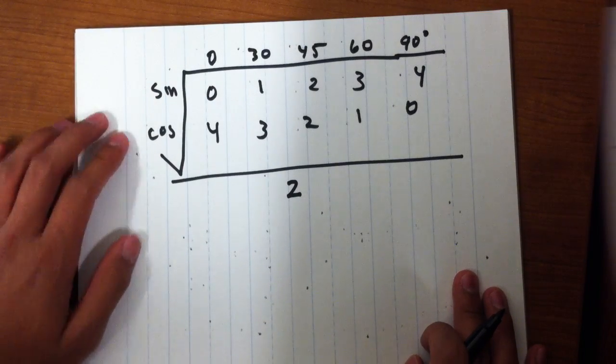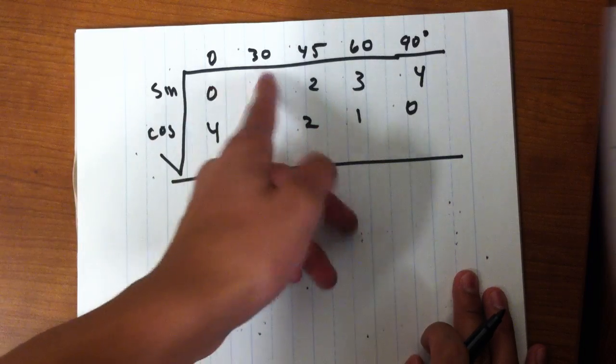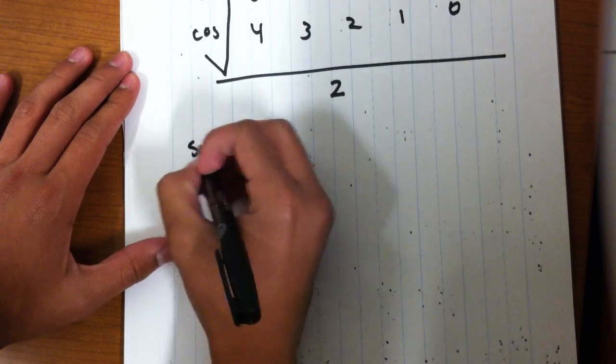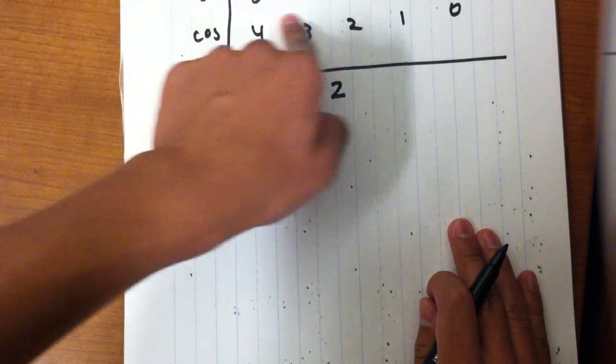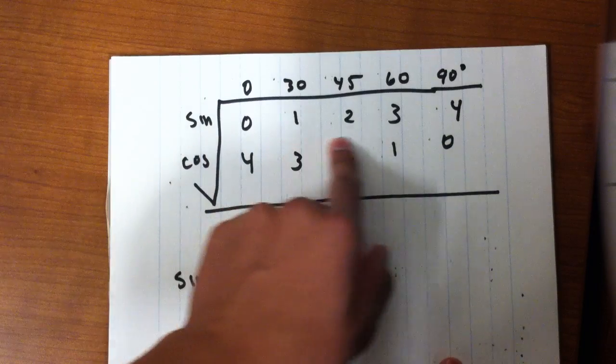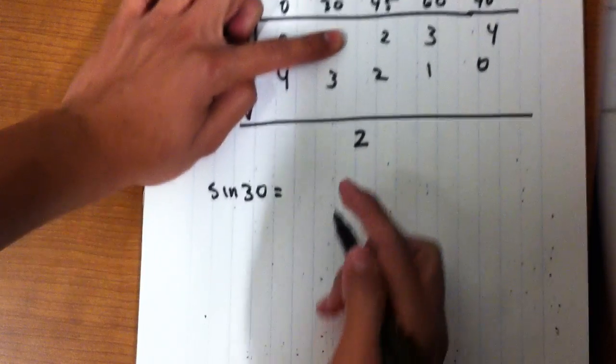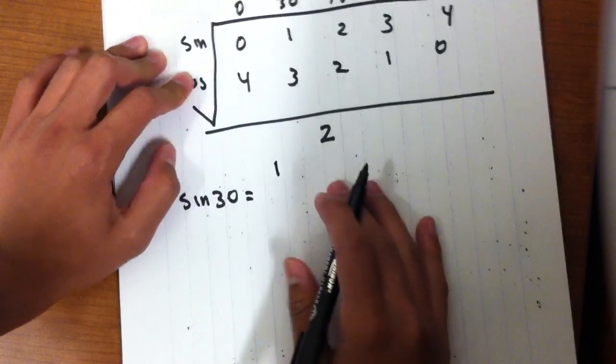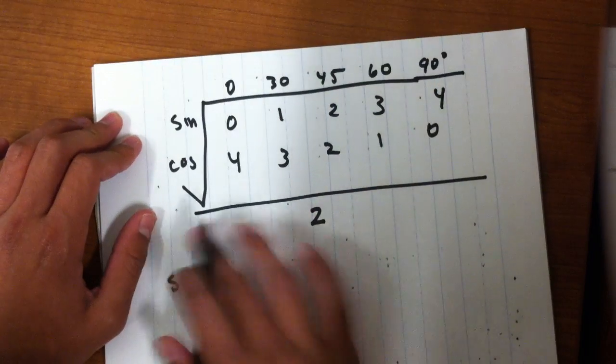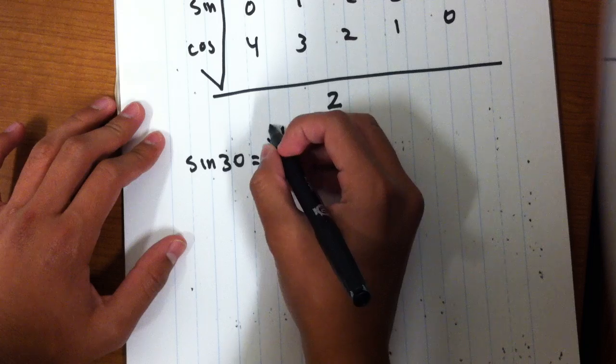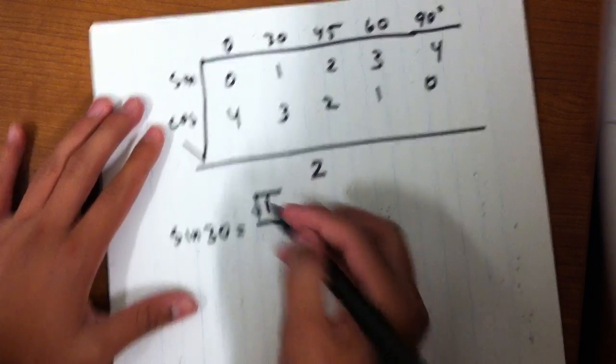Okay, so let's do an example. If we want to find sine of, let's say 30, sine of 30 is going to equal—you're going to go to sine, the line of sine, you're going to go right below the 30, which is 1. Then you square root it, then you do the division by 2.